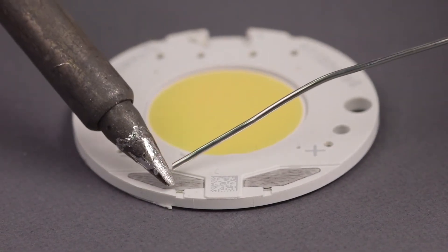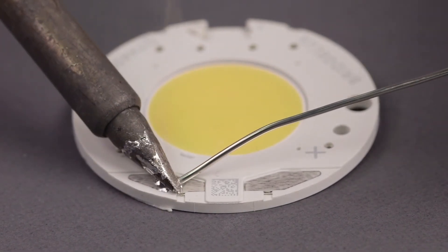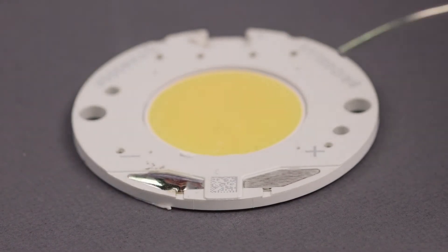We then pre-tin the solder pads on the array with the same process. Continue to add solder to the pad until a small dome is formed.